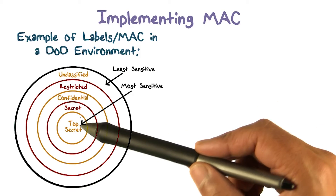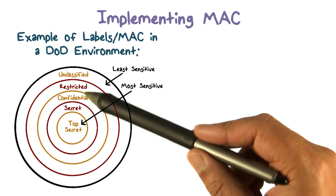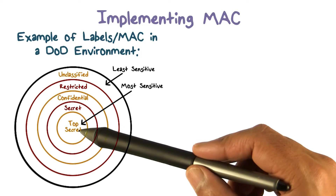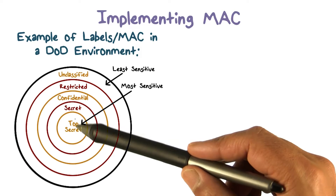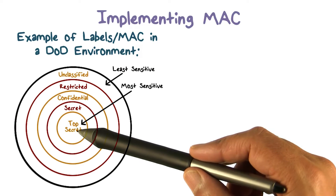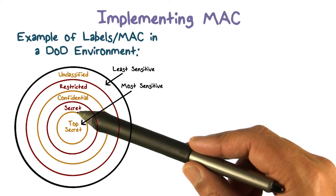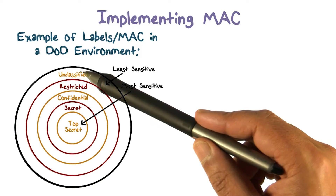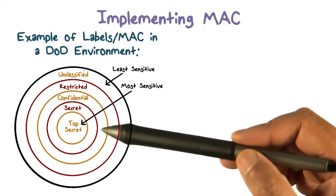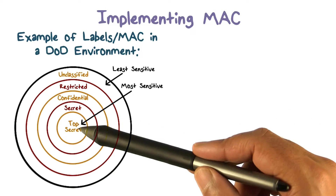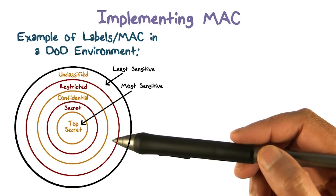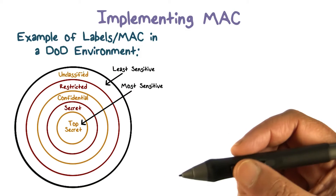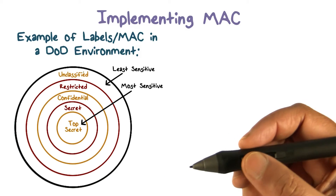Information is going to have a classification, and a user is going to have clearances. The highest sensitivity is typically top secret — that's the innermost one. Then secret, confidential, and going out we have unclassified, which anyone can see. So most sensitive to least sensitive — this is the level at which somebody is cleared, or the classification level of a document.